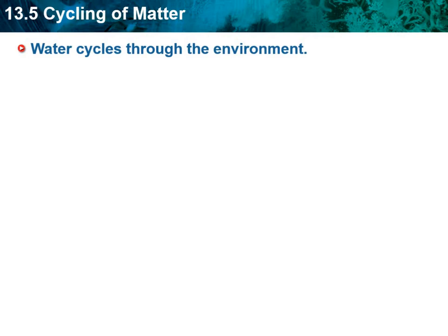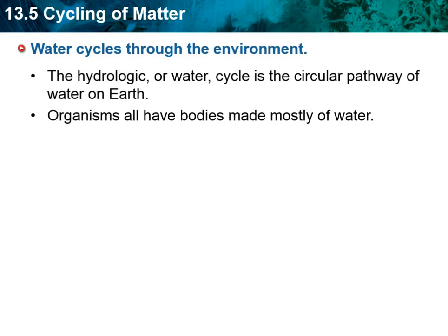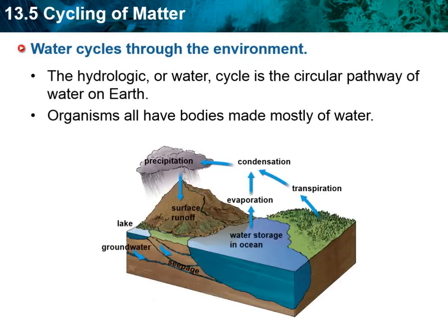One of these cycles for matter is the water cycle. The hydrological or water cycle is a circular pathway of water on the earth, and organisms all have bodies made mostly of water. Looking at the diagram, evaporation is water leaving the surface of bodies of water - as it gets heated up, it changes form into a gas.